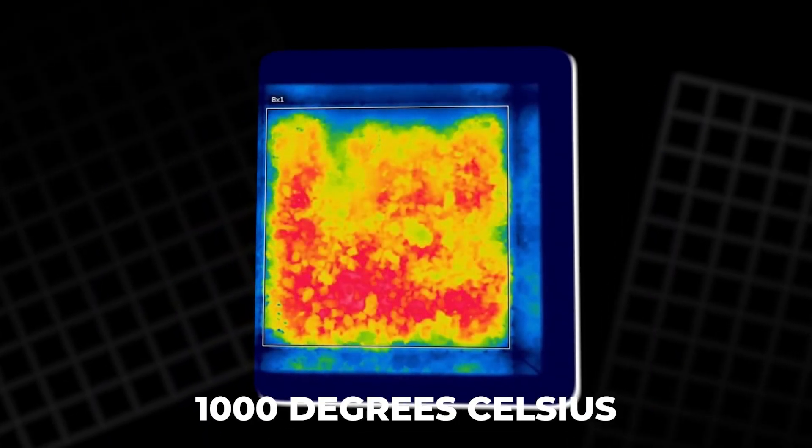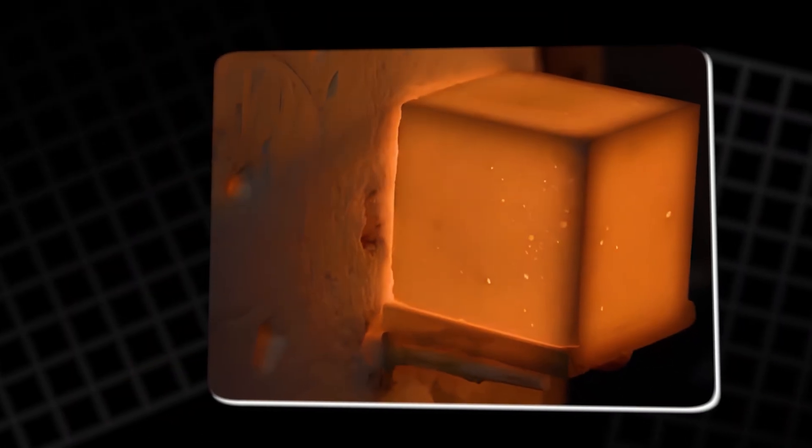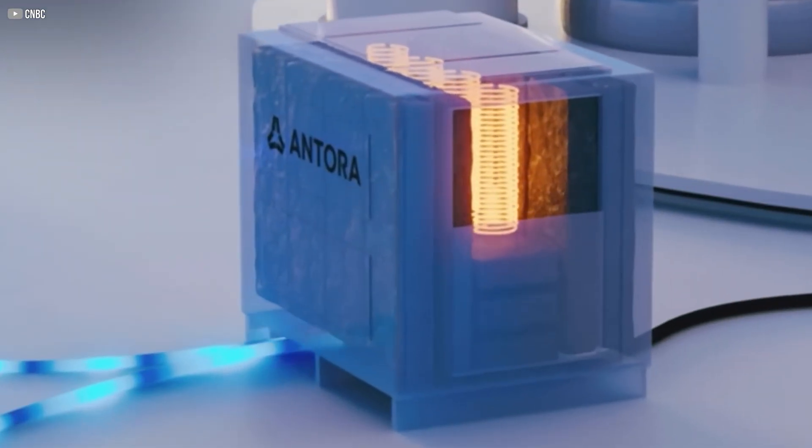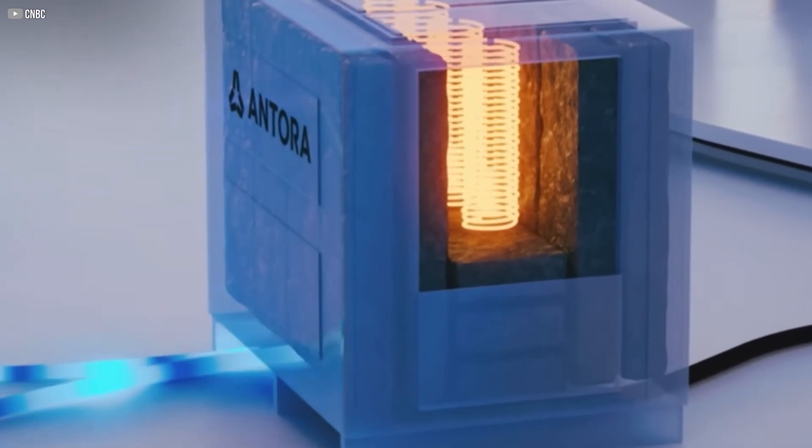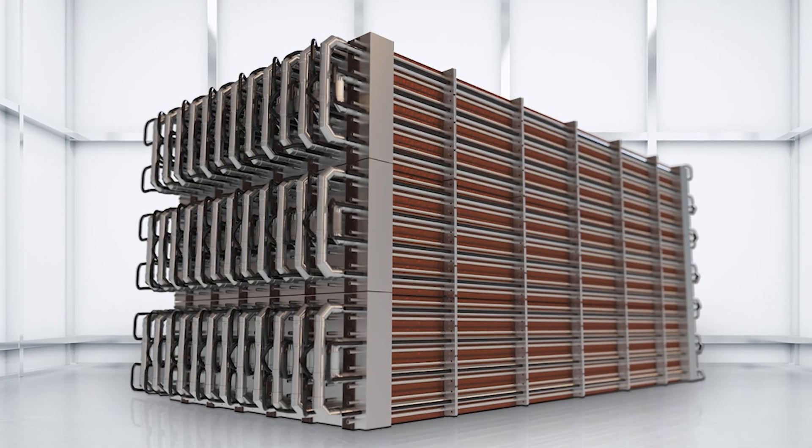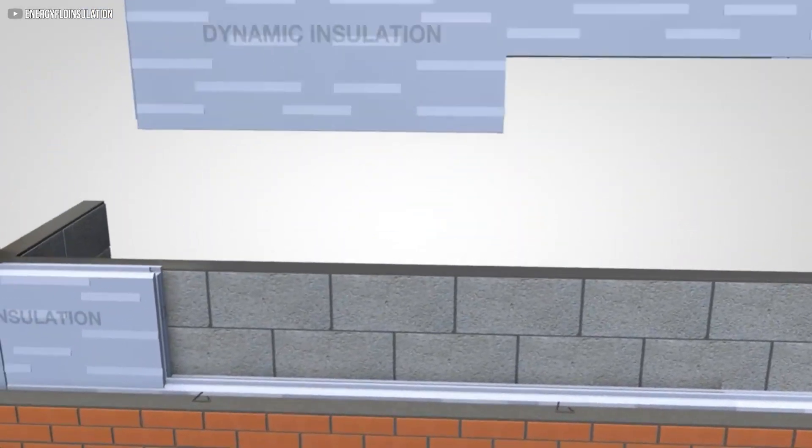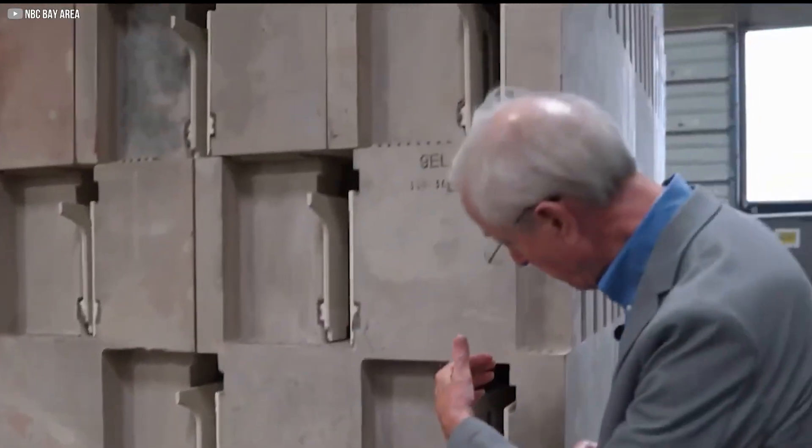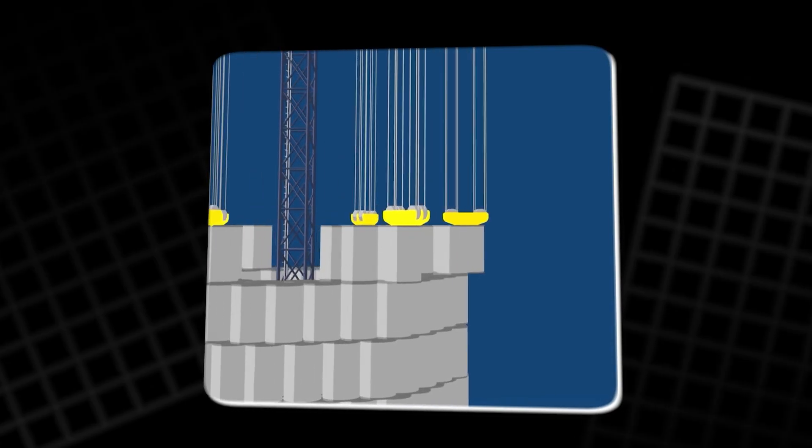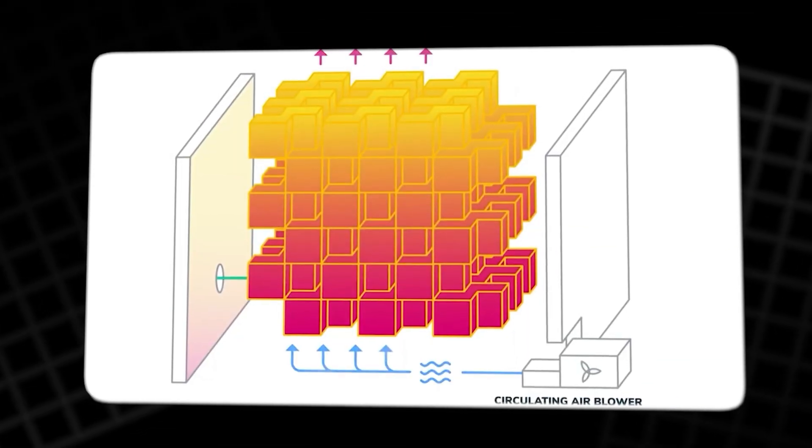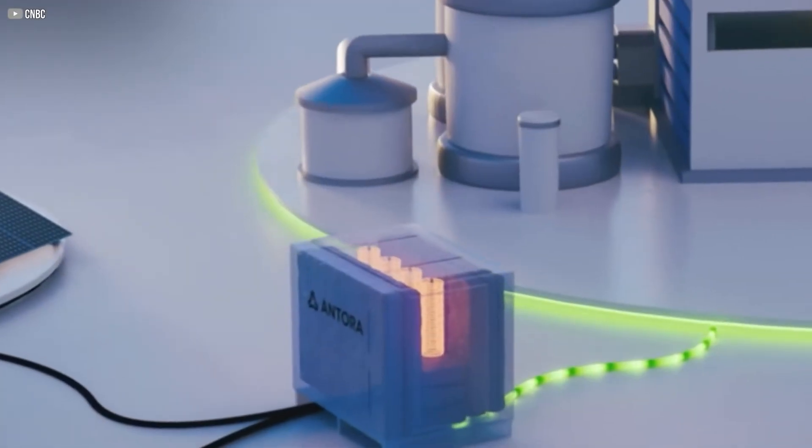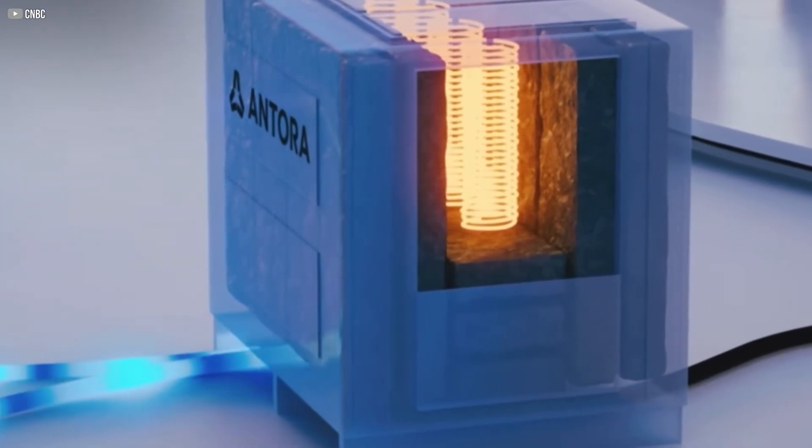Keeping the heat in. Storing heat at over 1,000 degrees Celsius sounds promising, until you think about how easily heat escapes. At that temperature, even the best insulation can fail fast. So how does Rondo keep the heat locked in for hours, even overnight? The answer is dynamic insulation. Instead of just wrapping the chamber in thick materials, Rondo built a smarter barrier. Their system uses a double-wall design with an air gap in between, similar to how double-glazed windows work. But instead of argon gas, this gap contains flowing air. Here's the trick: the air in the gap isn't passive, it moves in a controlled loop around the entire battery before being directed over the hot bricks.